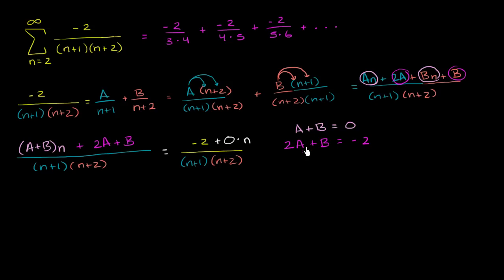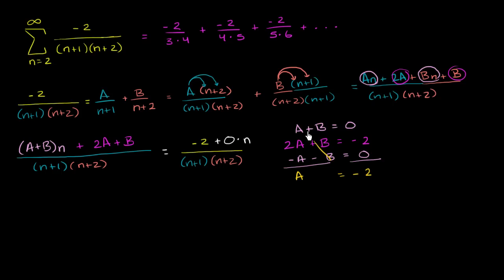Now we have two equations in two unknowns. Multiply the top equation by −1 to get −A − B = 0, then add to 2A + B = −2. We get A = −2. Since A + B = 0, B must equal 2. Negative 2 plus 2 equals 0 — that checks out.